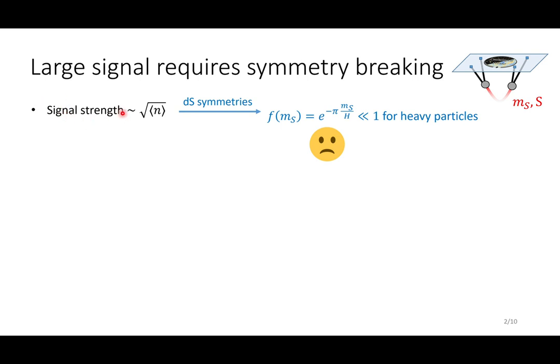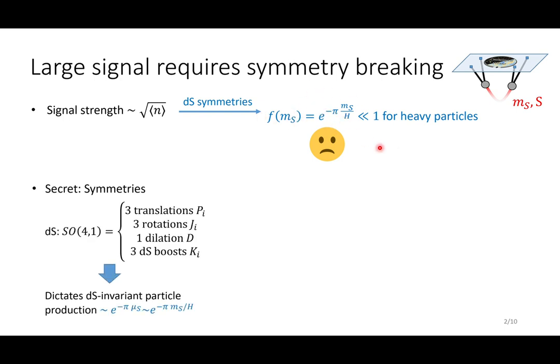Because the CC signals come from the on-shell propagation of the massive particles, the signal strength is proportional to the square root of the particle number density, which is determined by de Sitter symmetries to this exponential form.